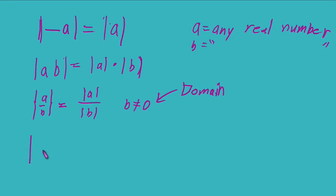And the last rule we need to be familiar with. The absolute value of a plus b is less than or equal to the absolute value of a plus the absolute value of b. And I'm going to neglect doing the derivation of that, but that is known as the triangle inequality.